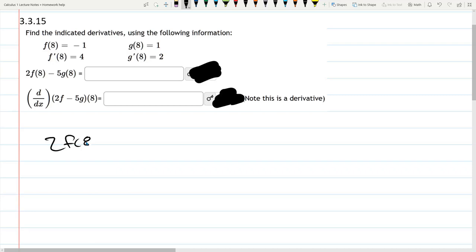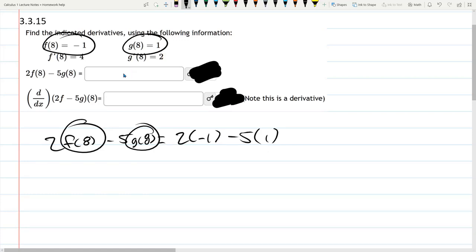So 2f(8) minus 5g(8). All you need to do is swap in the f(8) and g(8) values, negative 1 and positive 1 respectively. And simplify that down. That's your first answer right there. That's not calculus, that's just regular algebra there.